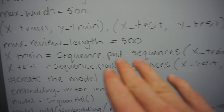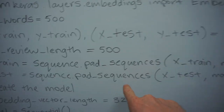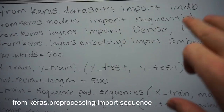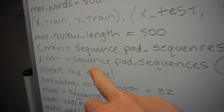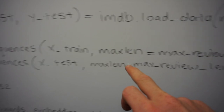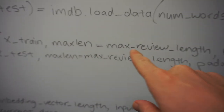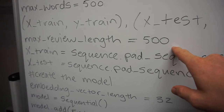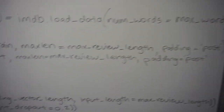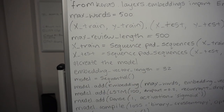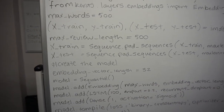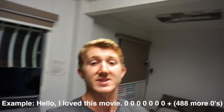Padding means making all sequences the same length. If one person wrote hundreds of words on IMDB and another just wrote 'great movie,' we use pad_sequences from Keras to ensure the max length is max_review_length, which is 500 words. Padding is applied after, so every sequence in x_train and x_test is 500 words long. If a sequence is only 300 words, 200 zeros are added to the end.